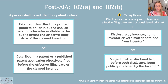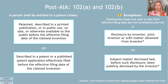Another situation where you could have prior art is if the invention was described in a patent or patent application filed by somebody else before you filed your application. However, there are a number of exceptions to the prior art rules. If you have a disclosure — for example, in an article or some other kind of written documentation like a manual — written and disclosed by the inventor of the patent at issue, that's not going to qualify as prior art in the United States if it occurred one year or less before the filing date of that patent.